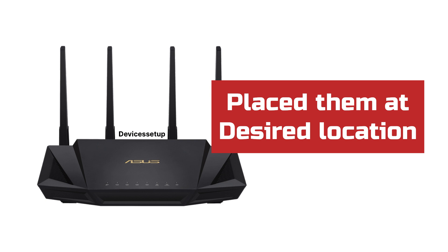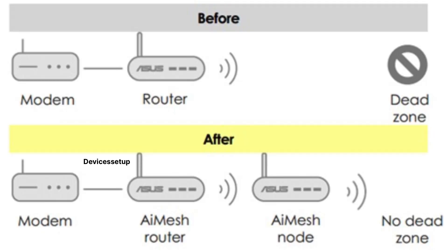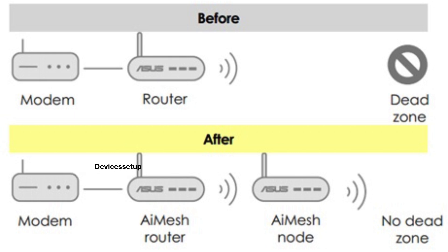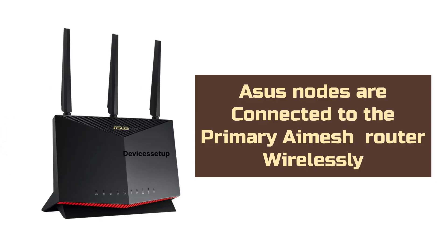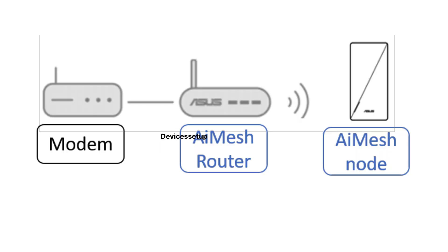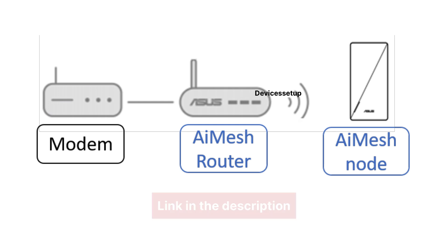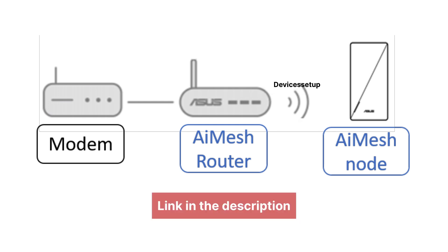After setup, place the nodes at the desired location. The best option is to place secondary AI Mesh nodes halfway between your primary router and the location where you need Wi-Fi connectivity. The ASUS nodes connect to the primary router wirelessly by default, but if you connect them with an Ethernet cable, it will provide much faster speeds than a wireless backhaul. That is discussed in detail in another video linked in the description.